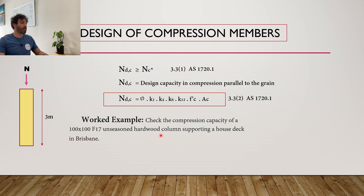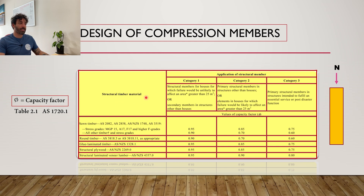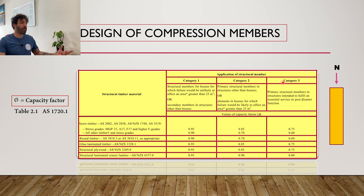We will start with the phi factor, which is the capacity factor, found on Table 2.1 of AS 1720.1. This table is divided into categories based on the importance of the structure. Category one is a member whose failure causes only minor damage. Category two — for example bearers and posts — means a significant portion of the structure may fail if it does. Category three covers primary members in a hospital or post-disaster structure.